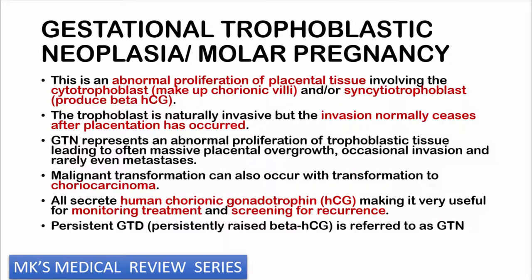Today we're going to be looking at molar pregnancies, which are more accurately termed gestational trophoblastic neoplasia. Remember that this is going to be an abnormal proliferation of placental tissue involving the cytotrophoblast as well as the syncytiotrophoblast. The cytotrophoblast is responsible for creation of the chorionic villi, while the syncytiotrophoblast is responsible for production of the hormone beta-HCG. This trophoblast is naturally invasive, but invasion normally stops after placentation has occurred.